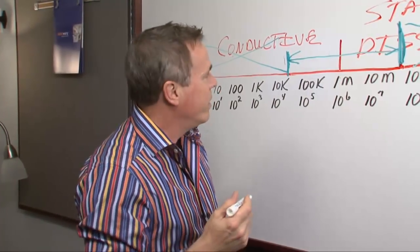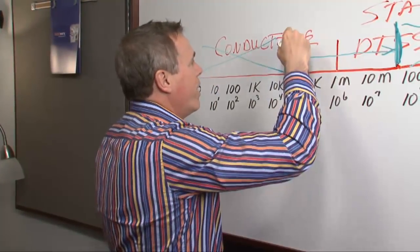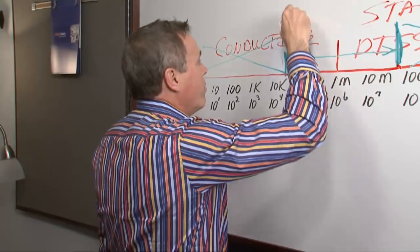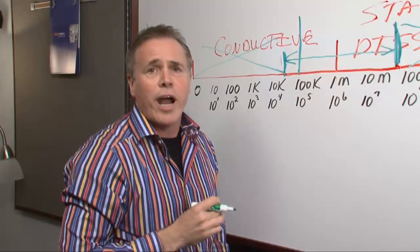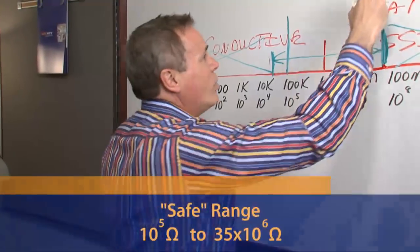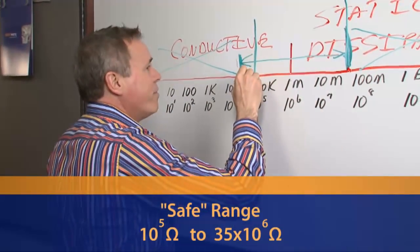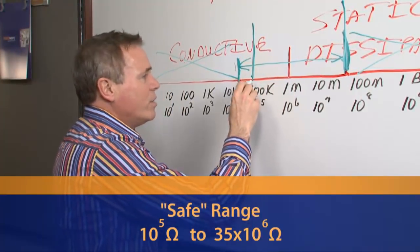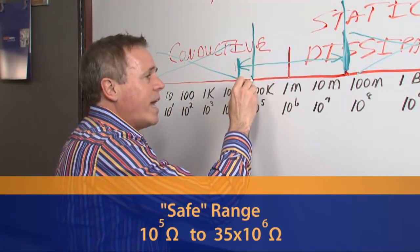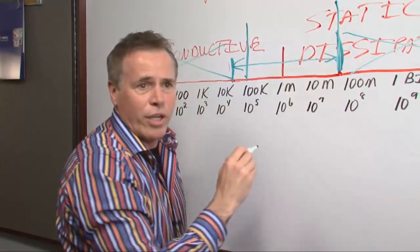So what we look at is a little bit of margin of error. We like to use 100,000 ohms as our minimum resistance. So when we talk about a floor that's going to be safe but still work, what we're talking about is a floor that will measure between 100,000 ohms and 35 million ohms.